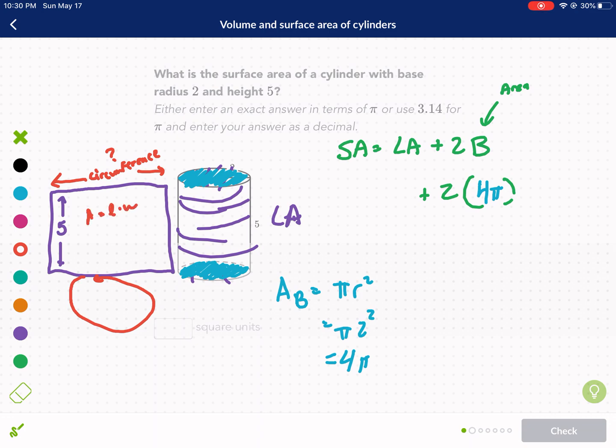So our circumference is going to be 2πr, and then we're going to multiply that by the height. That's our formula for lateral area of a prism: 2πr times the height. Well, we know 2π times 2—radius is 2—and then our height is 5.